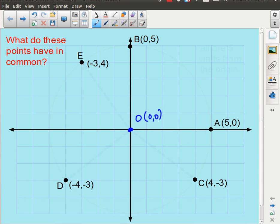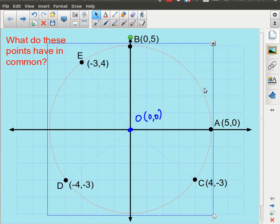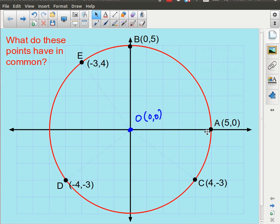And when we start discussing points that are the same number of units from some specified point, in this case the origin, then what we're actually describing is a circle. That is actually the definition of a circle. A circle is the connection or the infinite number of points that are equidistant from a single central point.